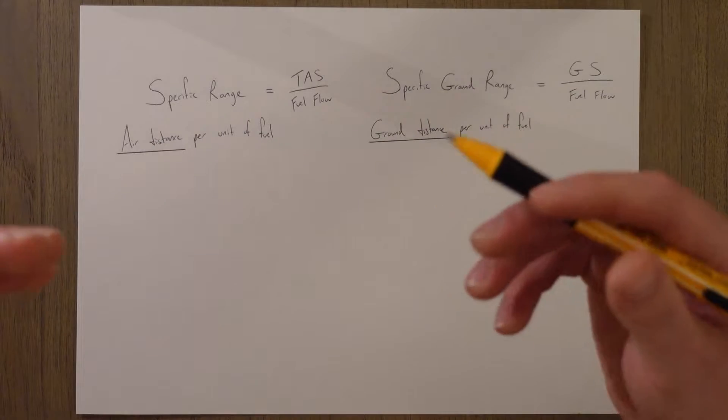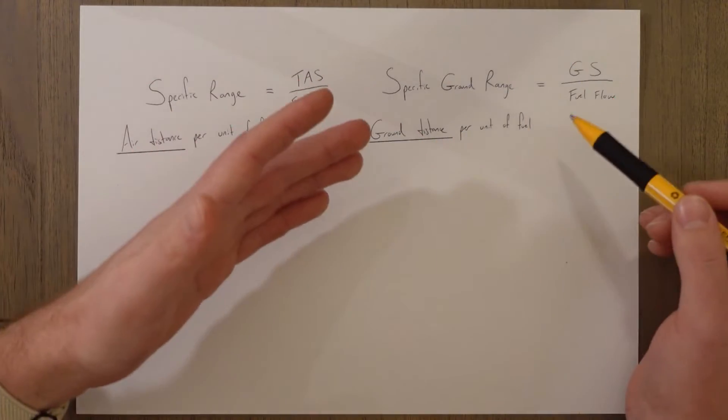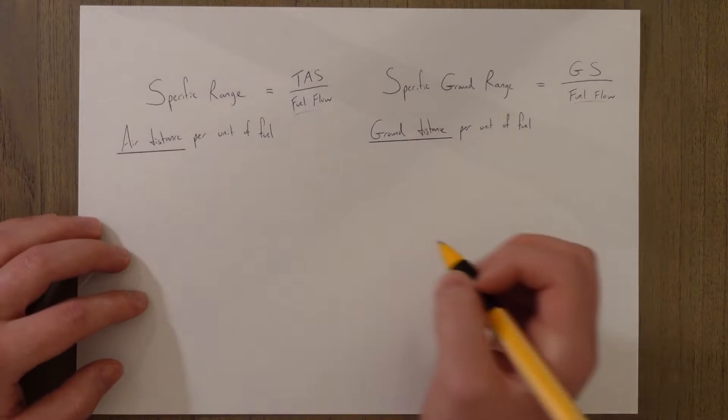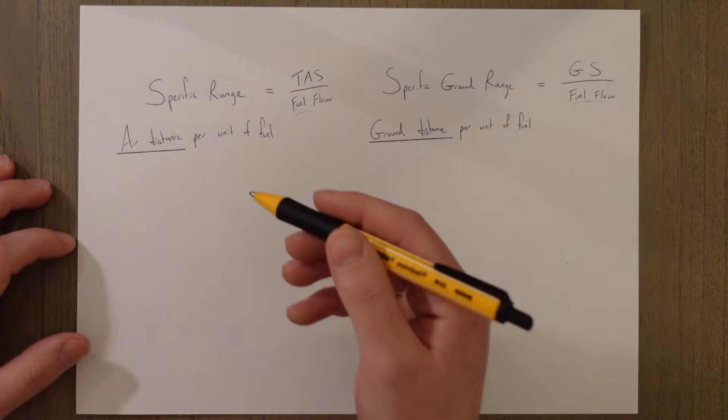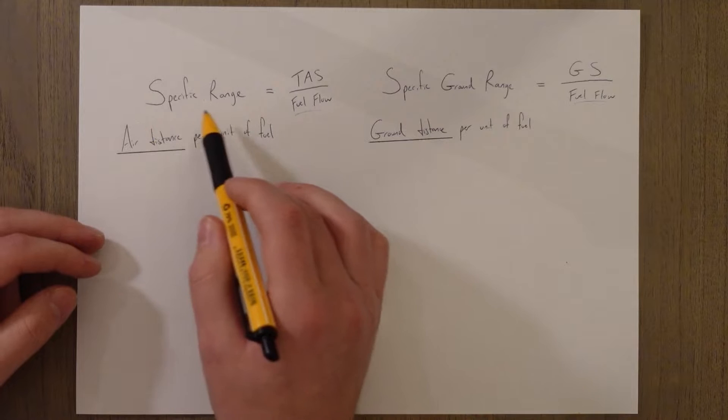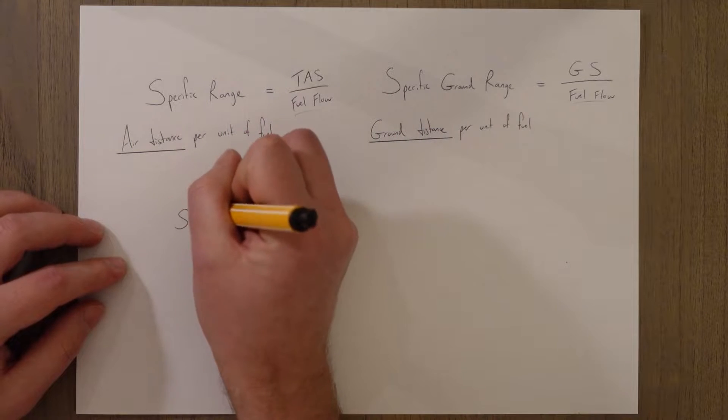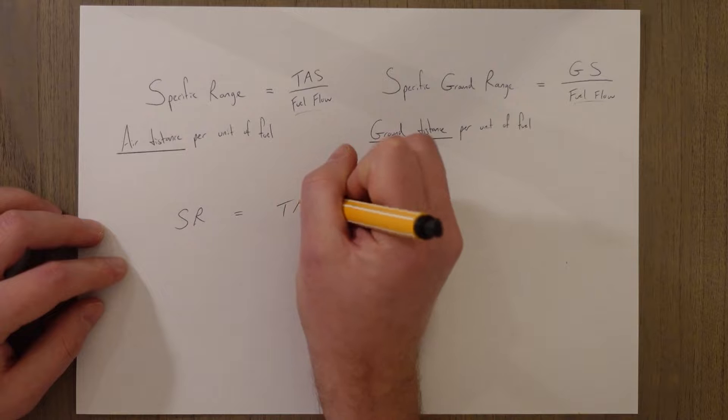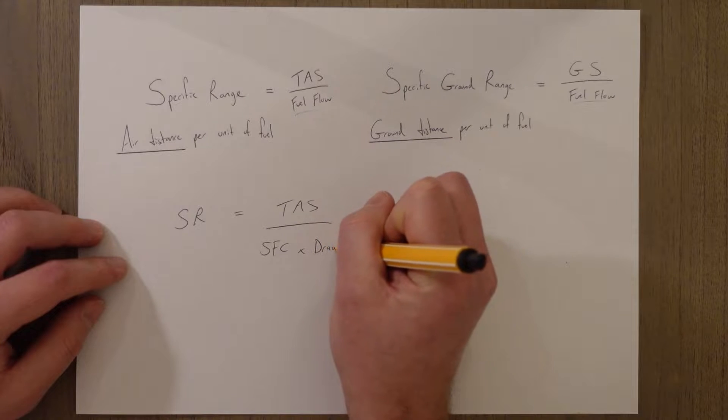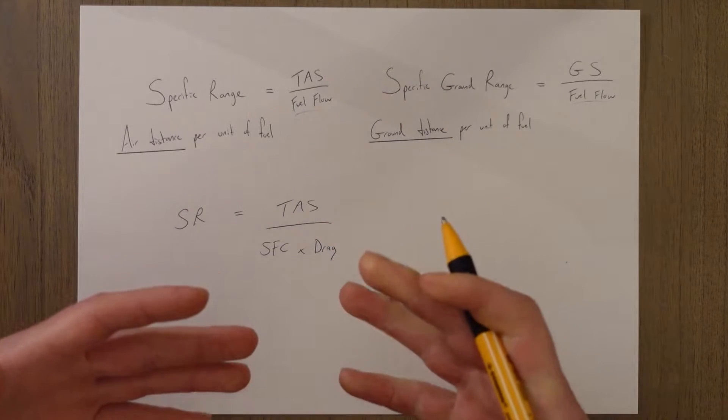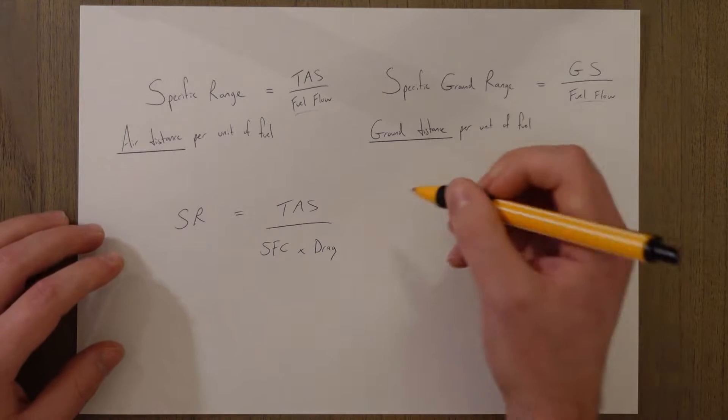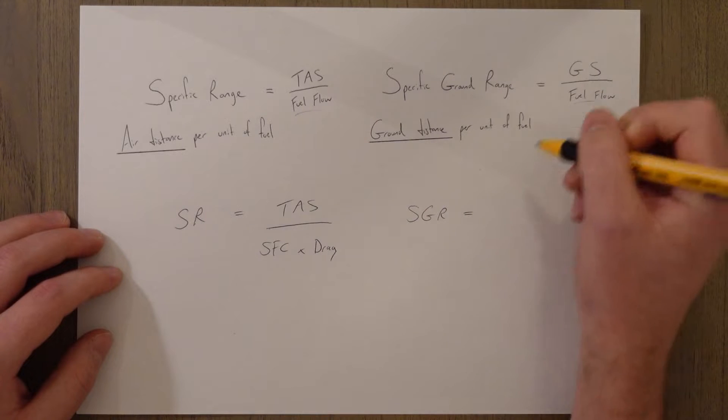Why is this important though? Well, we already have a formula for specific range and specific ground range, but we can break down the fuel flow into a little bit more detail. If we first have a look at the jet aircraft, then we can substitute in the value for specific fuel consumption into the specific range equation and get: specific range is equal to the true airspeed over the specific fuel consumption times drag, or the amount of thrust required for that phase of flight. Or if we want to find the specific ground range, we just have to substitute in ground speed.